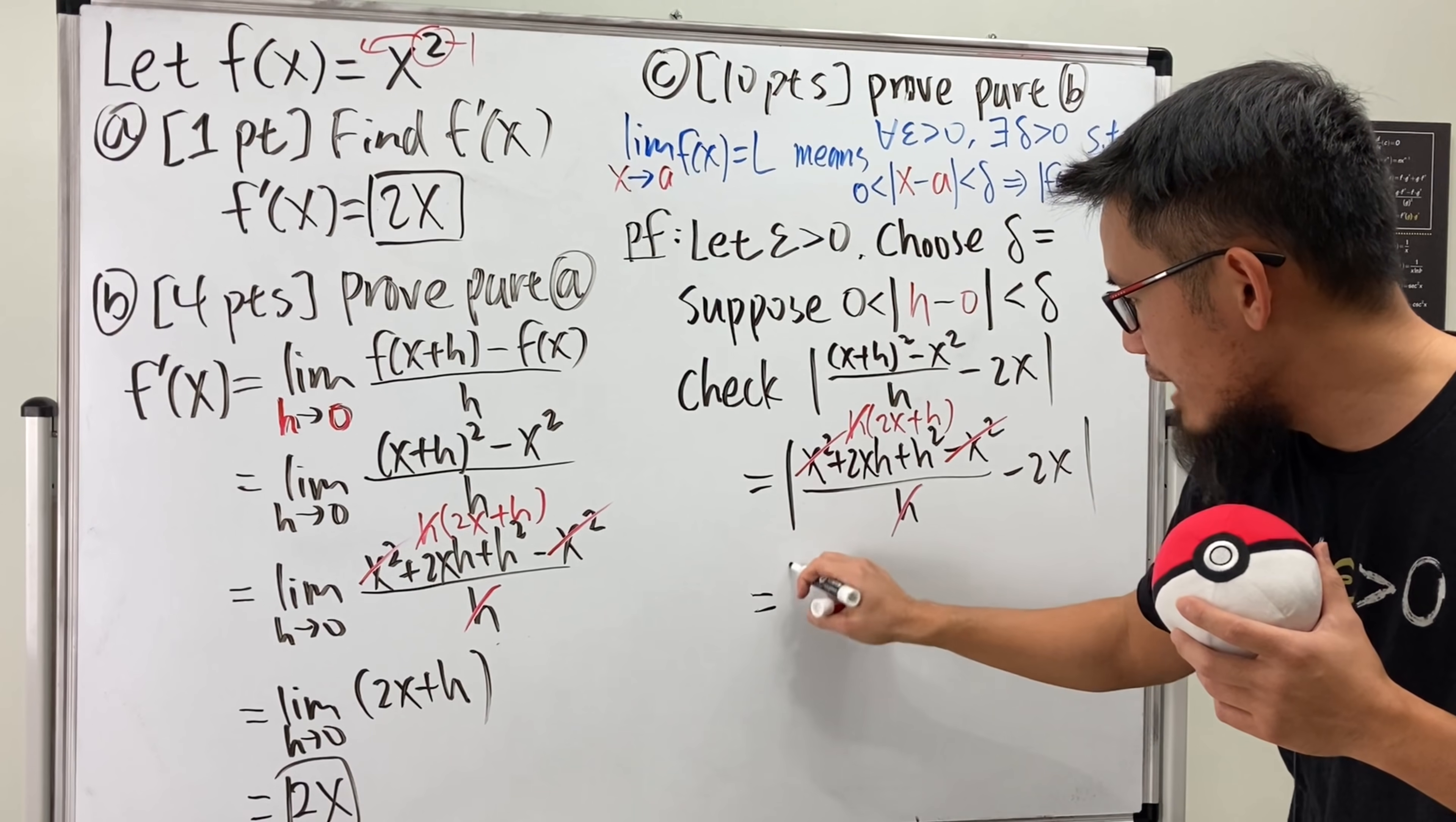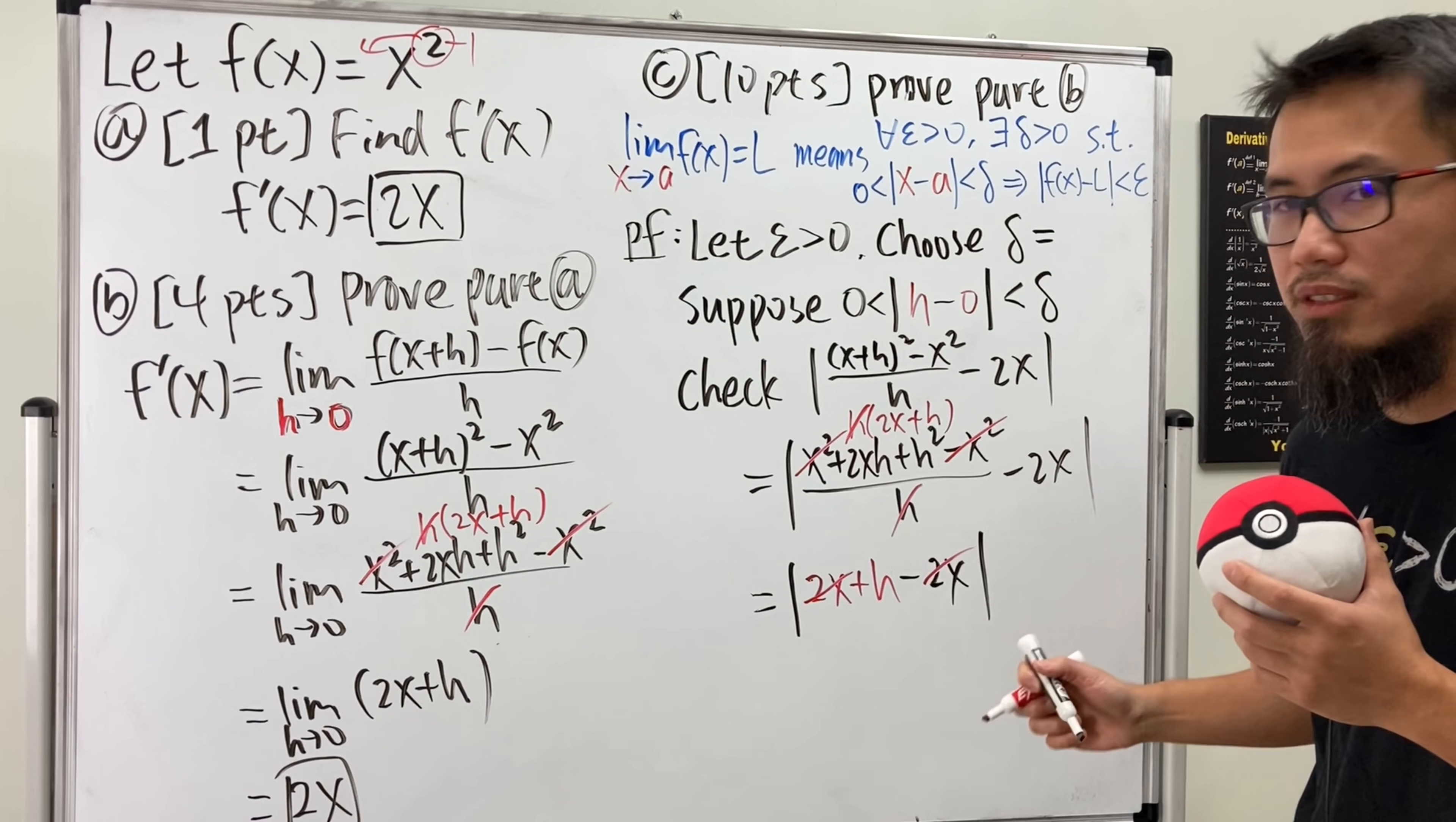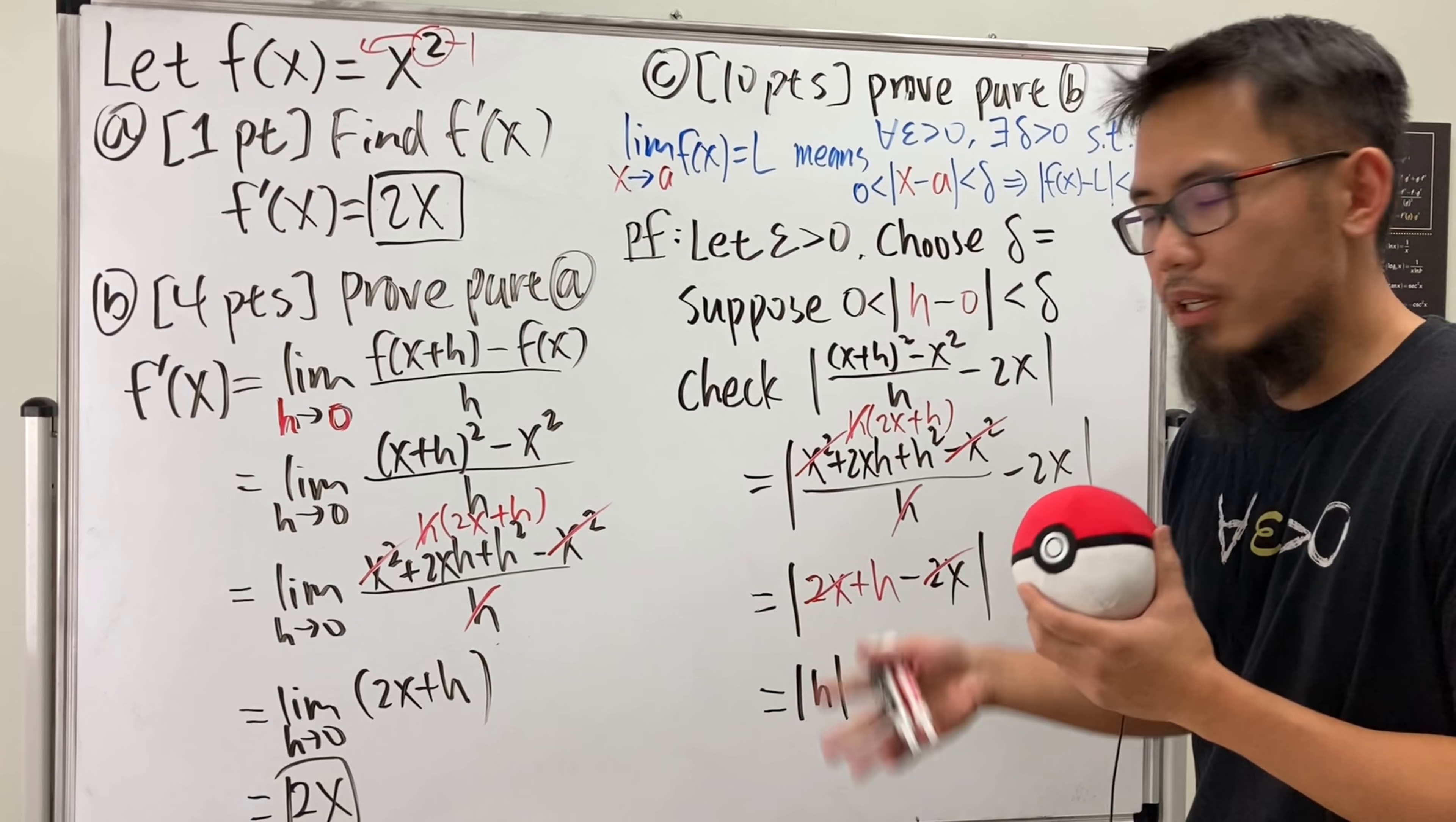And you see, here we have the absolute value, inside is 2x plus h, and this right here is minus 2x. And you might notice that this and that also cancels out, which is very nice. And in the end, we get the absolute value of just h. That's what we have after the simplification. Now what?